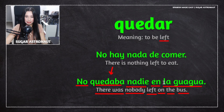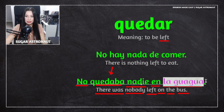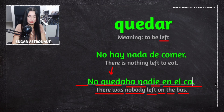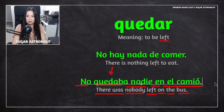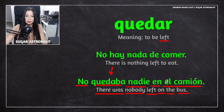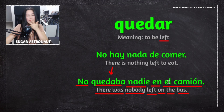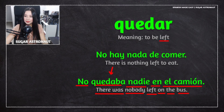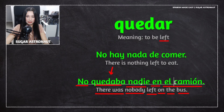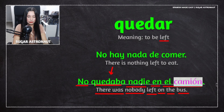In Mexico, the common word is 'el camión.' 'El autobús' is a more general term used throughout the Spanish-speaking world, so it's a safe choice anywhere. Very interesting how regional vocabulary varies.